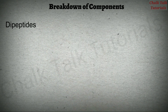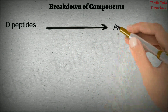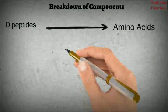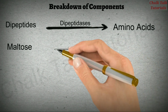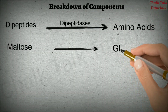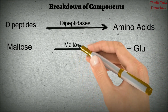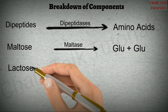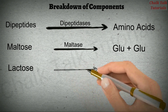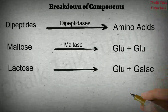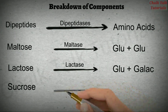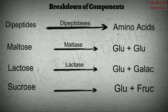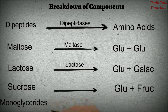Further breakdown of these simple substances also takes place to produce even simpler molecules like amino acids, glucose, and glycerol. Dipeptides are digested into amino acids with the help of enzyme dipeptidases. Maltose breaks down into two units of glucose with enzyme maltase. Lactose breaks down into glucose plus galactose with enzyme lactase. Sucrose is converted into glucose plus fructose with enzyme sucrase. Monoglycerides further break down into fatty acids and glycerol with enzyme lipases.